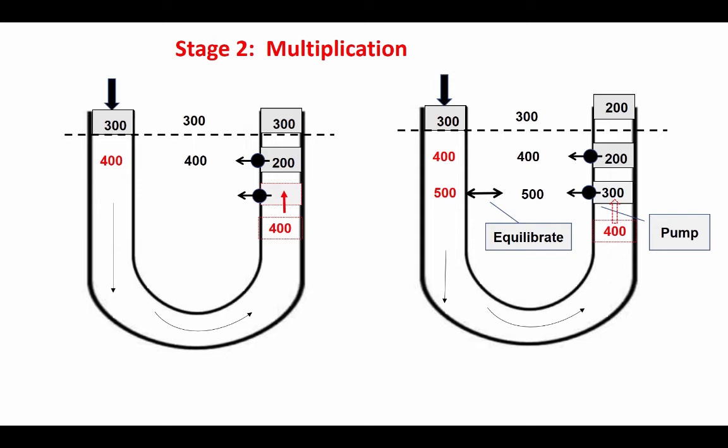Then there's going to be equilibration once again from the descending limb. Water is going to flow out. The fluid in the descending limb at this lower level is now going to be 500 milliosmoles. The interstitial fluid at this level is going to be 500 milliosmoles, and the fluid in the thick ascending limb is going to be 300 milliosmoles.